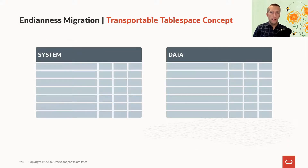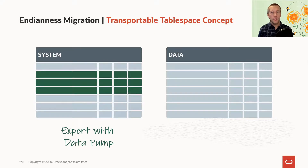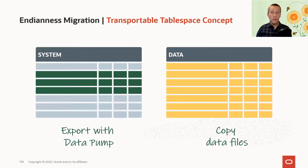We have two tablespaces here: the system tablespace and my data tablespace. From the system tablespace, I only need a subset of the data, because the data dictionary contains a lot of other information beyond my tables. So I can get that subset of data out of the system tablespace using Data Pump. In contrast, I have the data tablespace, which contains all the rows. In a user tablespace, there is only data, and in my data file there is only the data that I need. So instead of using Data Pump, I can just copy the entire data file.